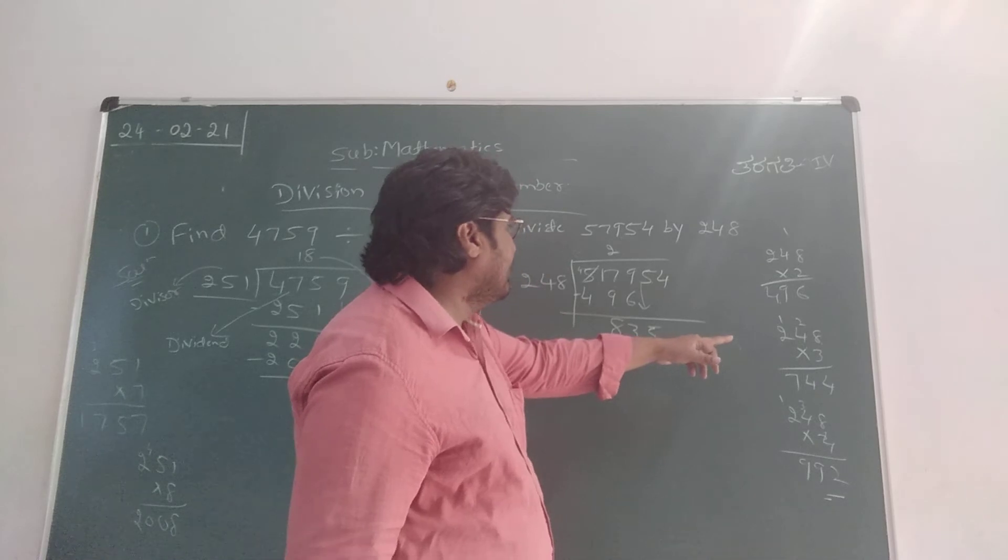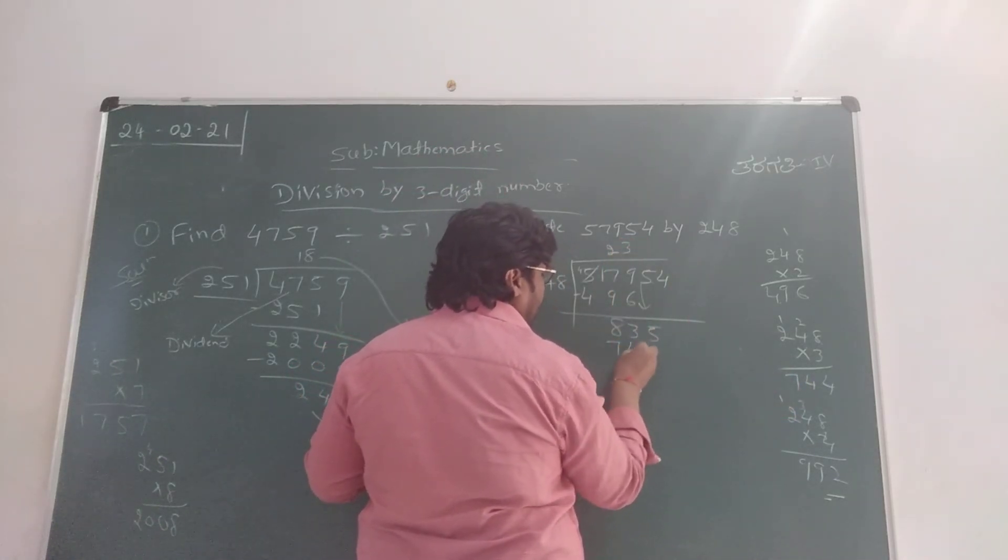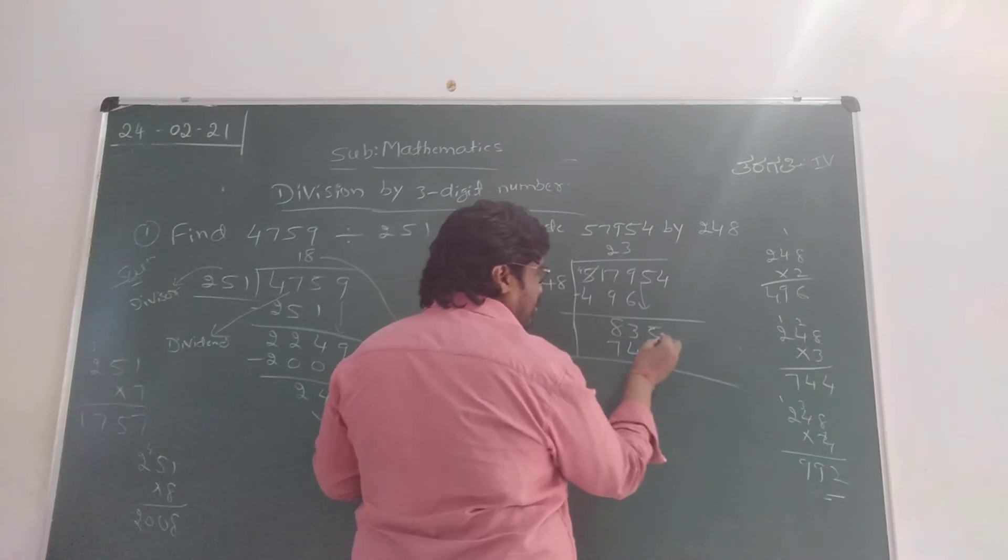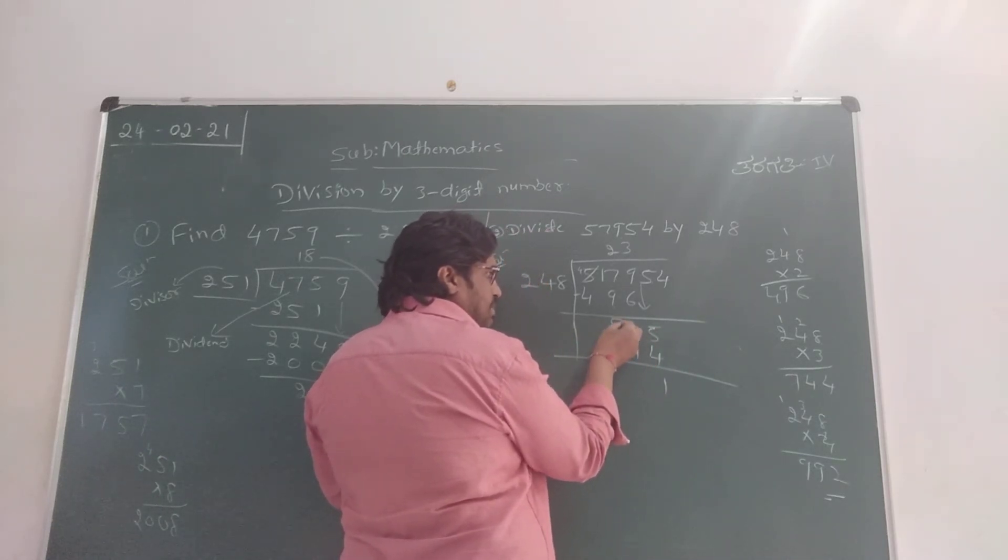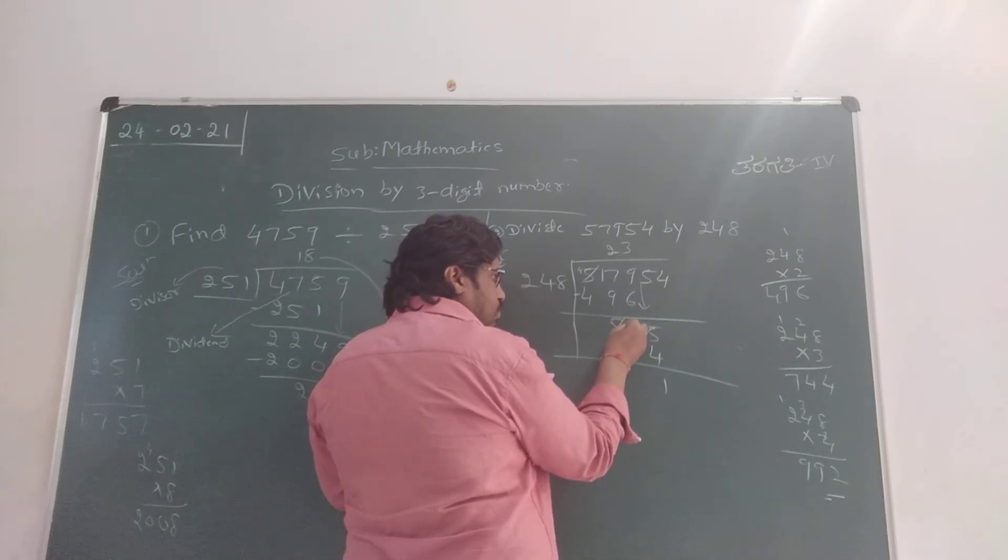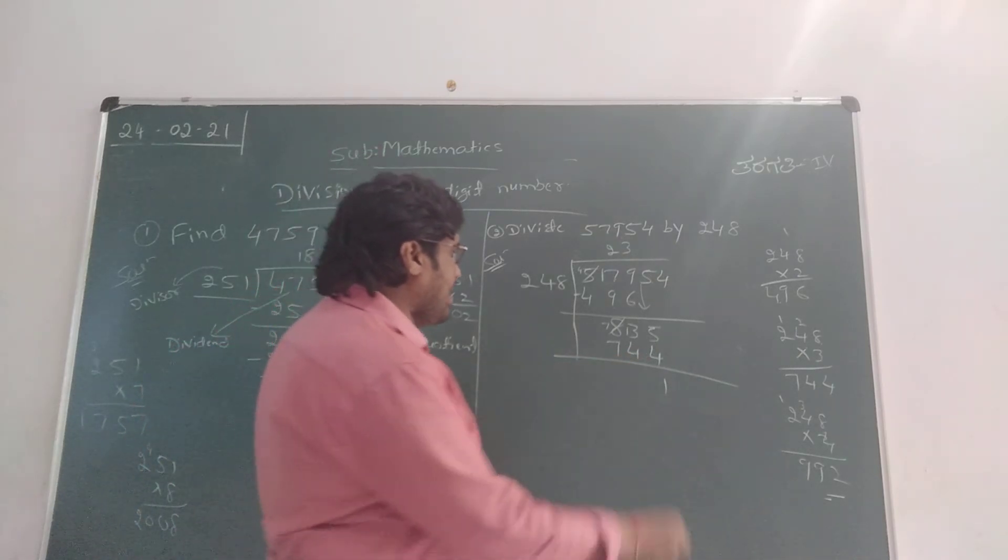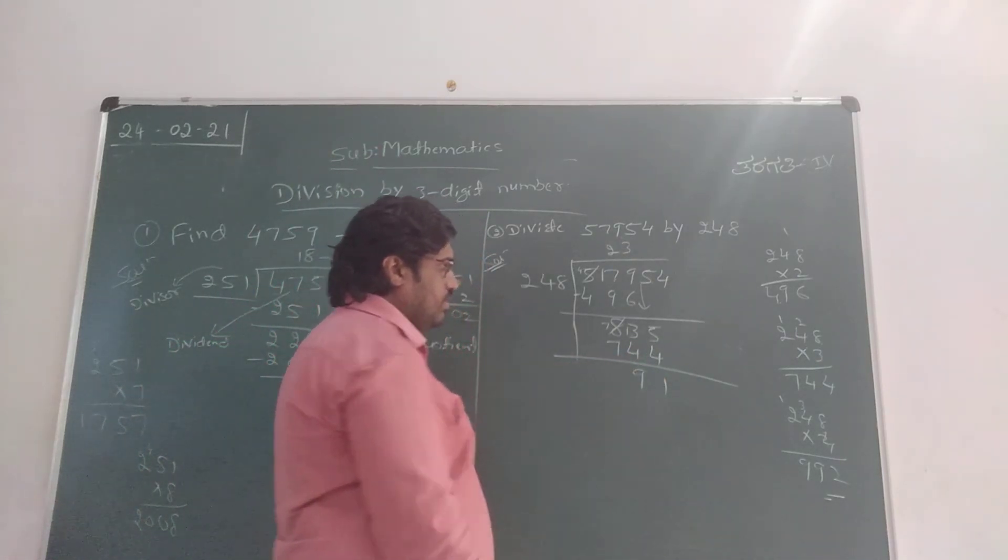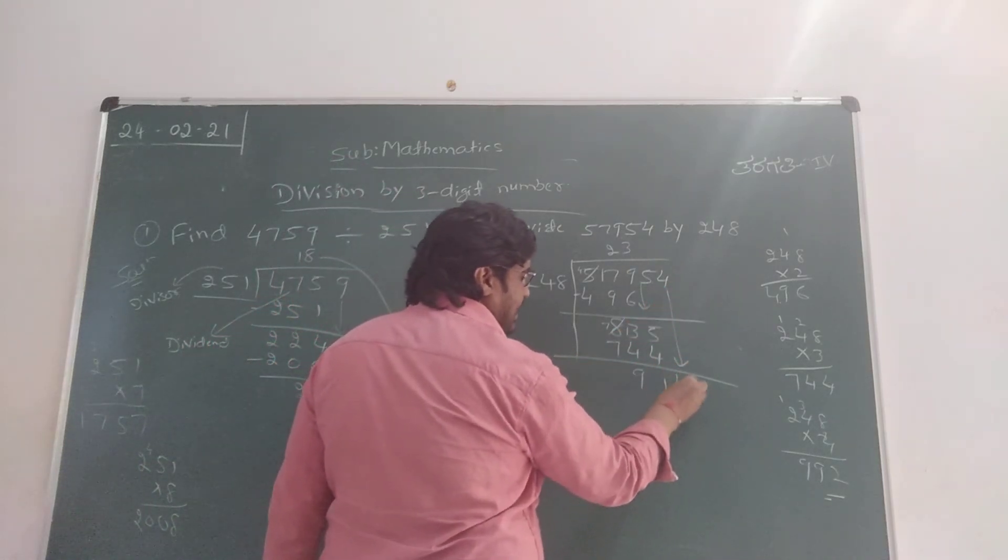992 is more than 835, so I am going to take 248 times 3, which is 744. I am going to subtract: 5 minus 4 is 1, 3 minus 4 is not possible, so I take 1 borrow. Then it becomes 13 minus 4 is 9, 7 minus 7 is 0. And I am going to take the next number, which is 4. That's 914.